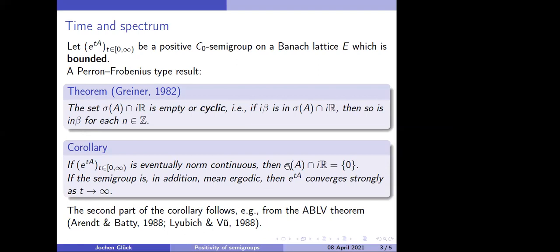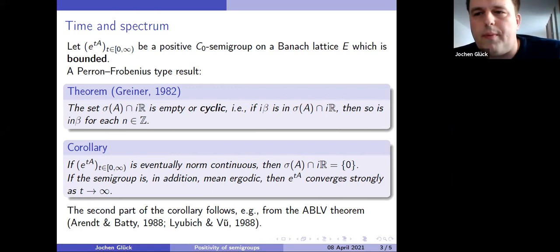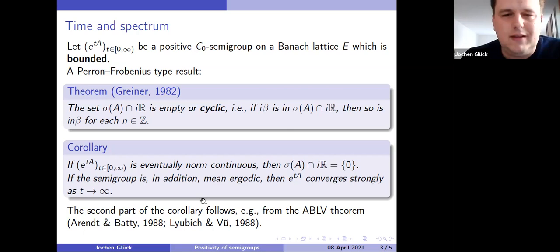May I please ask a question? Please. I'm not familiar with these notions. It strongly converges to zero or to? To an operator, just to an operator. So for every X in E, e to the TA times X converges in norm on E as T tends to infinity. It's convergence to an operator, but you can prove that in this case, the limit operator is automatically a projection. That's true. Thank you very much. You're welcome. So this is just this convergence here. That's an application of Perron-Frobenius theorem.